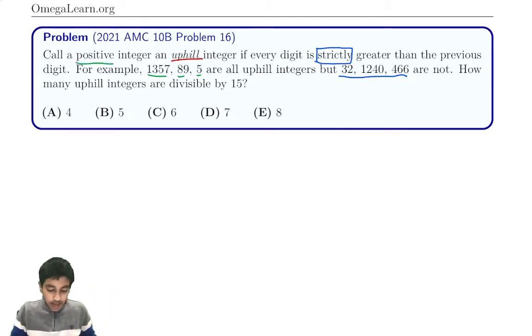So basically how many uphill integers are divisible by 15? The very powerful technique is the Chinese Remainder Theorem. If the number is divisible by 15, it's also divisible by 5 and 3.